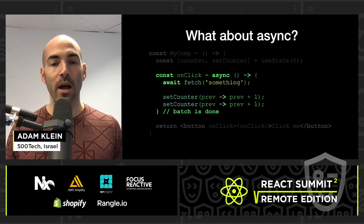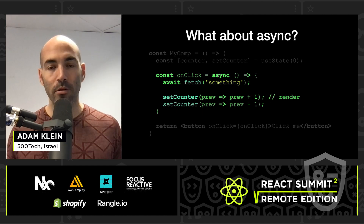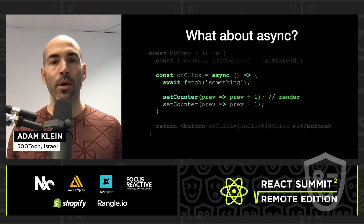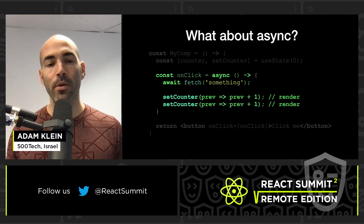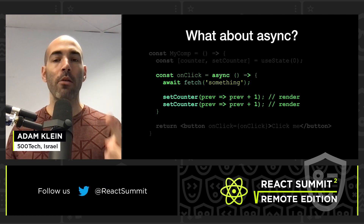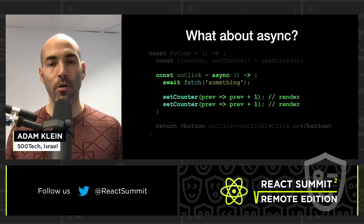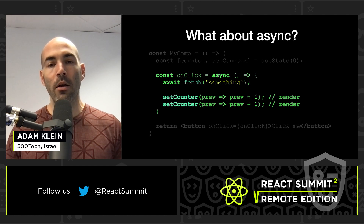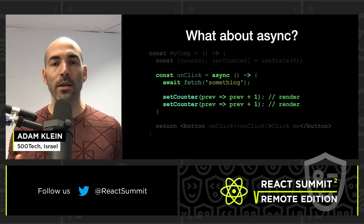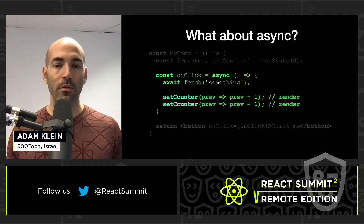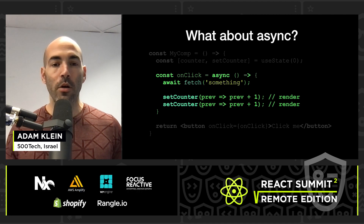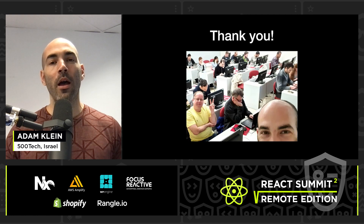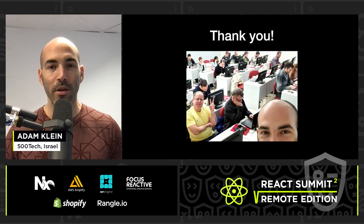What about async event handlers? The function completes before the async operation is done, so when we get to setCounter we are already outside of the batch. That means it will trigger a re-render immediately after calling setCounter. In this case we will have two calls to setCounter and two re-renders of the component. There are ways to manually invoke the batch but we won't cover them in this talk.